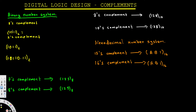One's complement can be done in two ways. One way is to just flip the numbers — there are only two possible numbers, one or zero. If it's one, we change it into zero, and if it's zero, we change it into one. So one becomes zero, zero becomes one, and one becomes zero again.